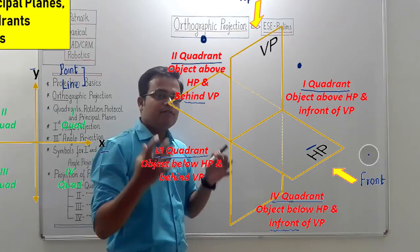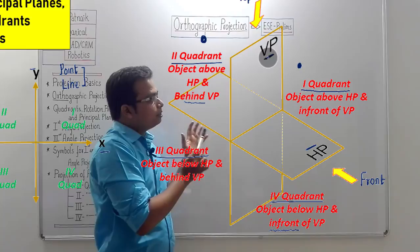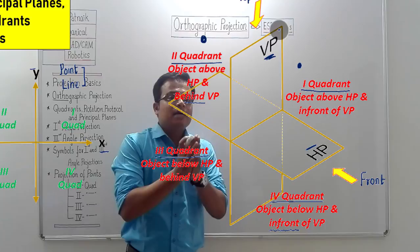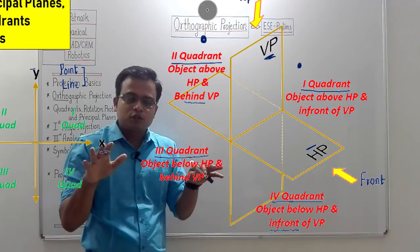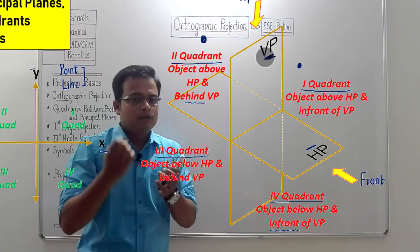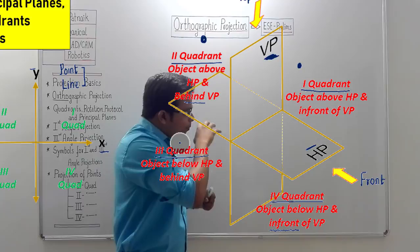Now, if an object is placed in the second quadrant, will you be able to see it from the front? No — because between the observer and the object lies the plane of projection, in this case the vertical plane. In such cases, you need to make the plane of projection transparent. In the second quadrant, viewing from the top is fine, but for the front view, the plane of projection must be made transparent.